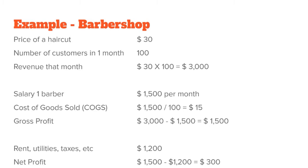To service all these customers, we need to hire one barber at $1,500 per month. We can also calculate the cost of goods sold — how much it costs every time you sell this product or service. In the barbershop's case, the only cost of goods sold is the barber's salary, since we're not offering extras like washing hair, disposable razors, wax, or styling. So the only cost we have is the salary.